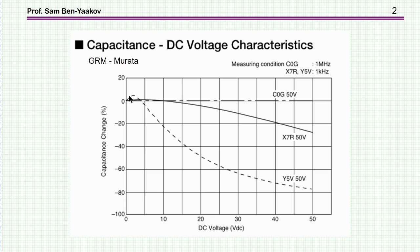If you start with a certain value, as the voltage goes up, this is a 50 volt capacitor, and as you reach the maximum value allowable, the capacitance drops by 80%. That is, you'll get only 20% of the initial value, which is very high.